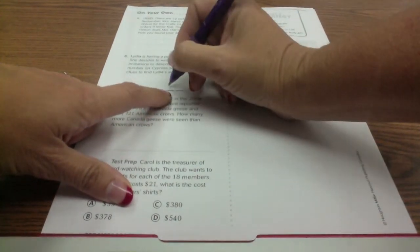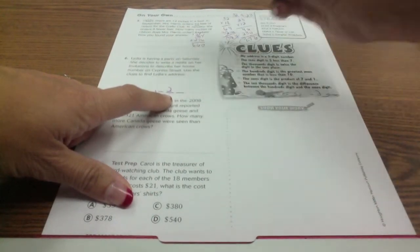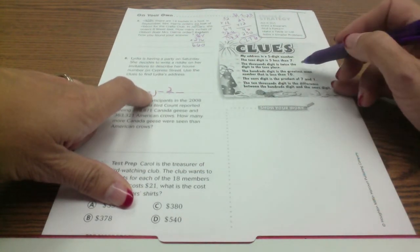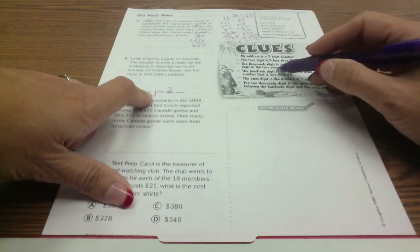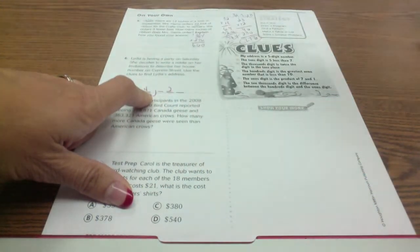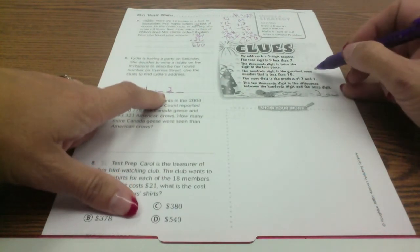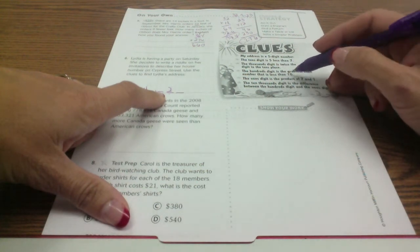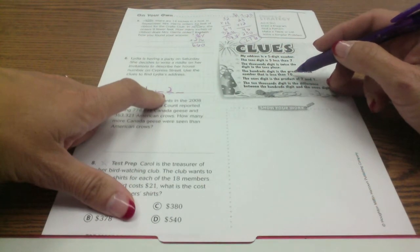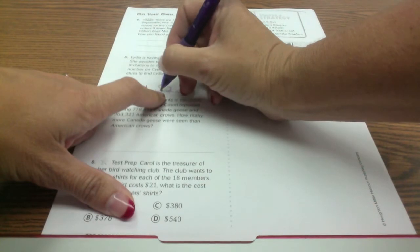The tens digit is five less than seven, so here's the tens digit. Five less than seven is a 2, seven minus five. The thousands digit, which would be here, is twice the digit in the tens place. So this is 2, twice the digit is going to be 4. The hundreds digit, which is here, is the greatest even number that is less than 10. So the greatest even number that's less than 10 would be 8, because the next number would be 9 and that's not an even number. So that's an 8.